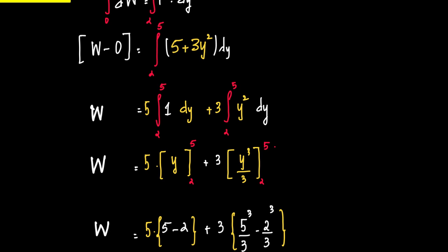5 is a constant, so I can take it outside. 5 into 1dy plus 3 into, 3 is a constant, I'll take 3 outside, into y squared dy.